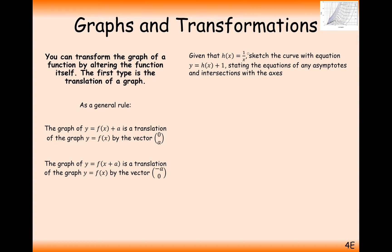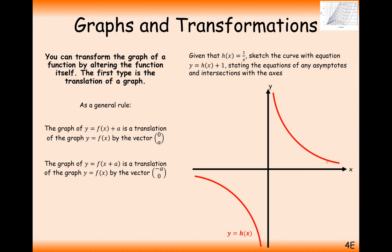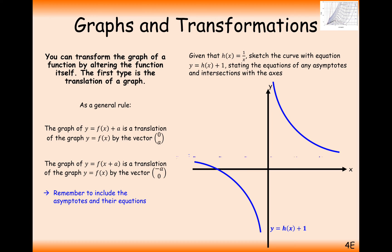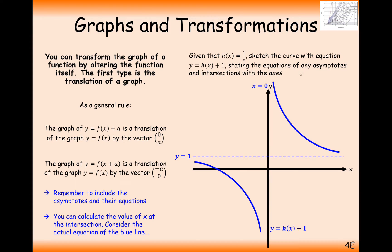Here's a more difficult one. Given that h(x) = 1/x, sketch the curve with equation y = h(x) + 1, stating any asymptotes and intersections with the axes. This is what the standard h(x) = 1/x graph looks like. For h(x) + 1, we've moved everything from the red line up by 1. The asymptote that was on the x-axis has now moved up by 1 as well, so now we have the equation y = 1 as our asymptote for this graph.